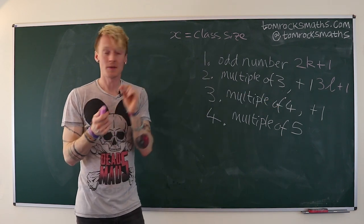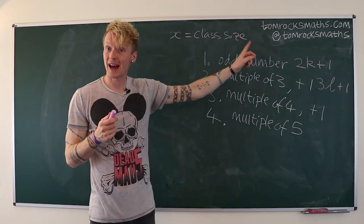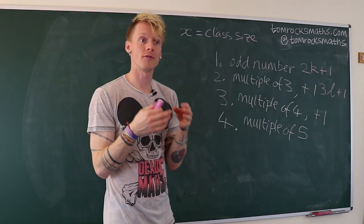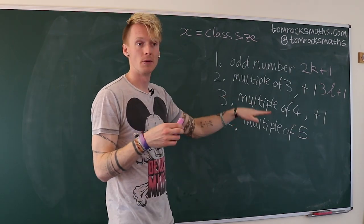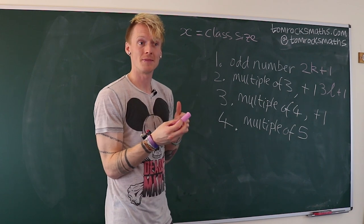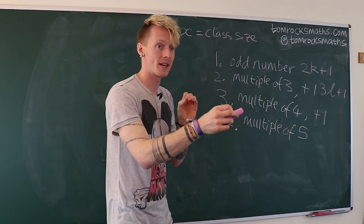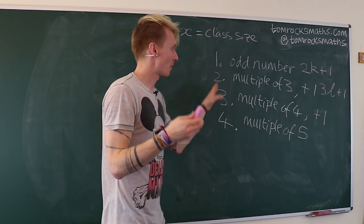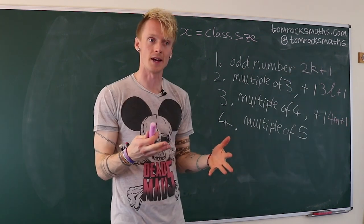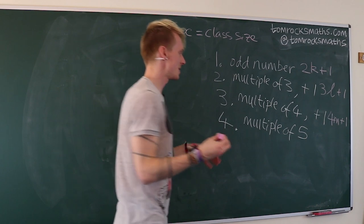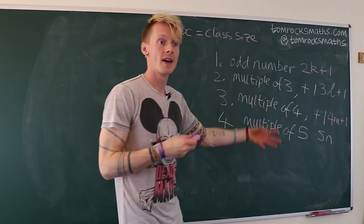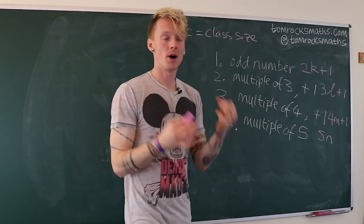I've used l here because l can and probably will be different to k. Continuing in the same way for rule number three, we need one more than a multiple of four, so x equals four m plus one. Rule number four is very similar except this time there is no remainder, so x is a multiple of five: x equals five n, where n is a positive whole number.